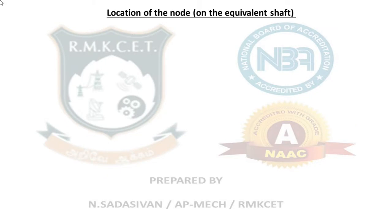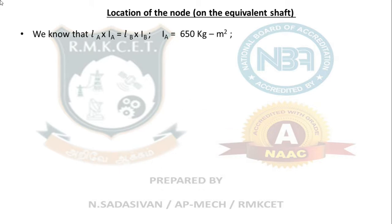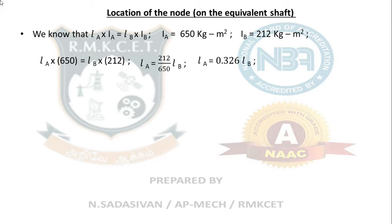Next, we find the location of the node on the equivalent shaft. We know that LA·IA = LB·IB. Substituting the inertia values: LA × 650 = LB × 212. Therefore, LA = 0.326·LB. This establishes a relationship between LA and LB using this simple condition.